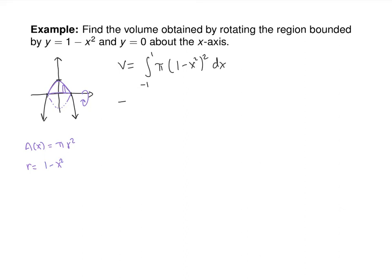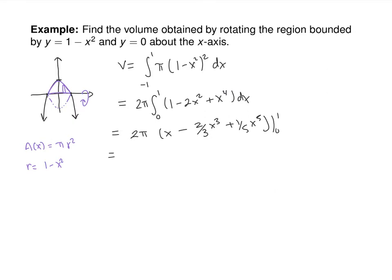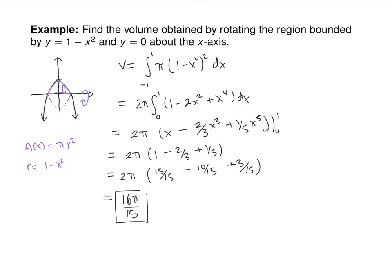Because the function inside the integrand is even, we can write this as 2π times the integral from 0 to 1 of (1 − 2x² + x⁴) dx. Anti-differentiating gives x − (2/3)x³ + (1/5)x⁵, evaluated from 0 to 1. That's 2π times (1 − 2/3 + 1/5) = 2π times (15/15 − 10/15 + 3/15) = 2π · (8/15) = 16π/15. The integral adds up all these mini-volumes to give the total volume.